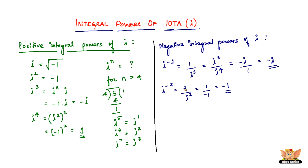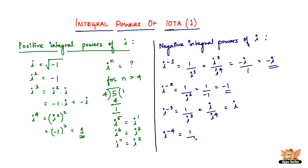I squared is the same as I to the power of minus 2. Then I to the power of minus 3 equals 1 divided by I cubed, which can be written as I divided by I to the power of 4. Since I to the power of 4 is 1, this simplifies to just I. So I to the power of negative 3 is I. For I to the power of negative 4, that equals 1 divided by I to the power of 4, which is 1 divided by 1, equaling 1. So I to the power of negative 4 is also 1.